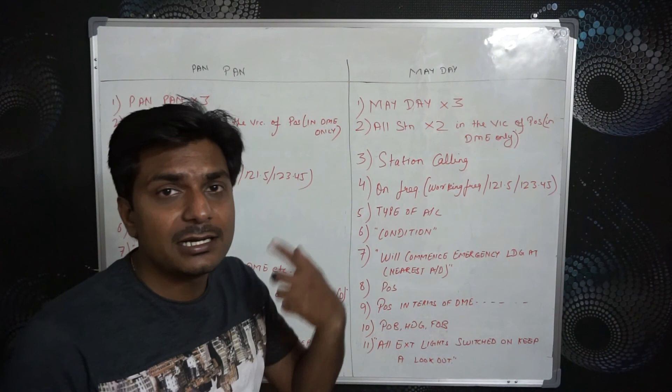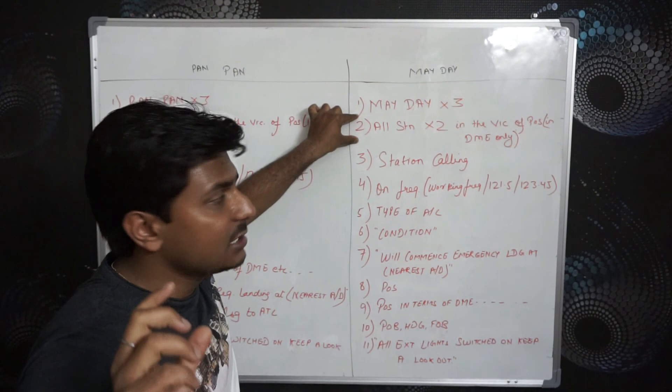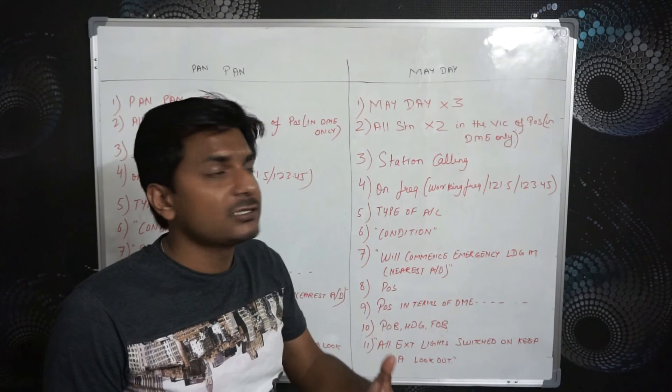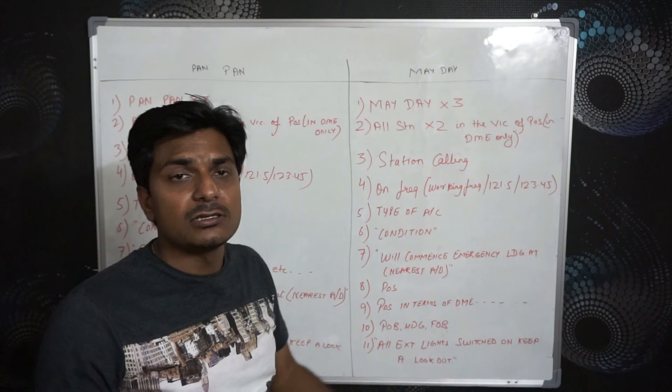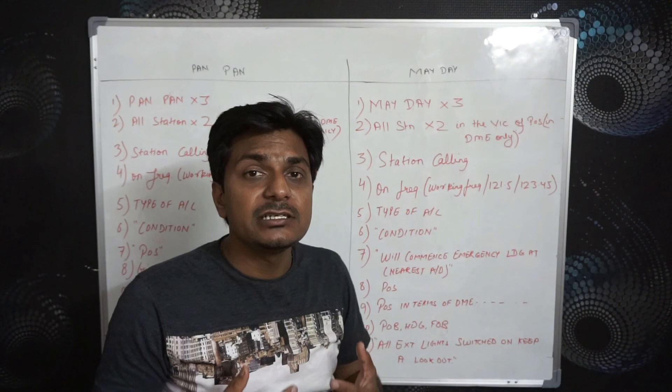It's the same as the normal condition, but in the normal distress format we have a station called. Here, since the station is not in contact, we will broadcast this message. For broadcasting, you have to say 'all stations, all stations.' But which stations? You have to say 'in the vicinity of the position' — meaning your current position. So you say: all stations, all stations, in the vicinity of position.